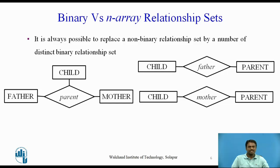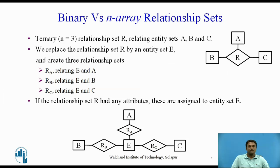In fact, it is always possible to replace a non-binary relationship set by a number of distinct binary relationship sets. For simplicity, consider the abstract ternary relationship set R (n=3) relating entity sets A, B, and C. We replace the relationship set R by an entity set E and create three relationship sets as shown in the figure: RA relating E and A, RB relating E and B, and RC relating E and C.